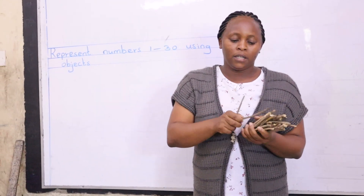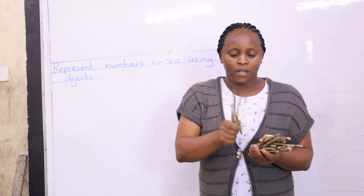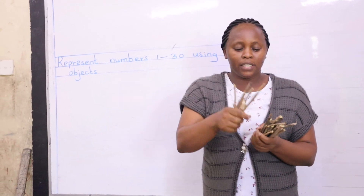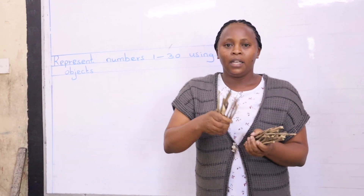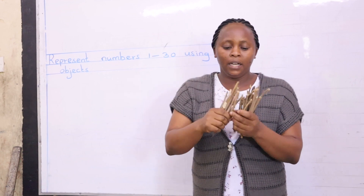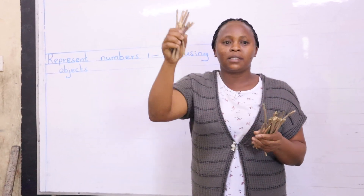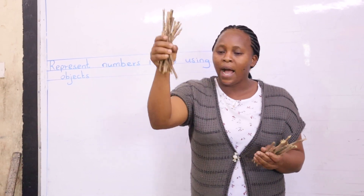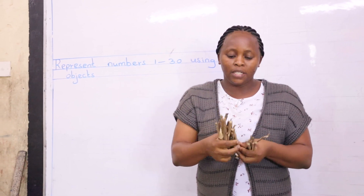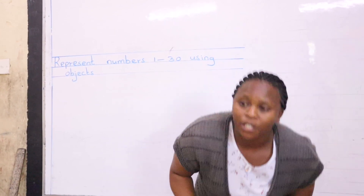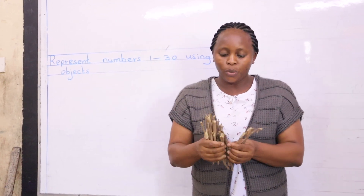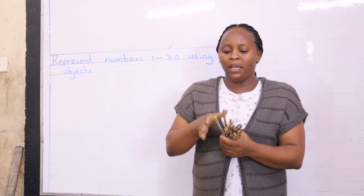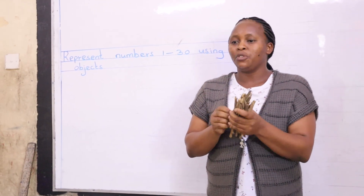So this is 1, 2, 3, 4, 5, 6, 7, 8, 9, 10, 11, 12, 13, 14, 15, 16, 17, 18, 19, 20, 21, 22, 23, 24, 25, 26, 27, 28, 29, and 30. With me here are 30 sticks that we have counted together. Are we together?